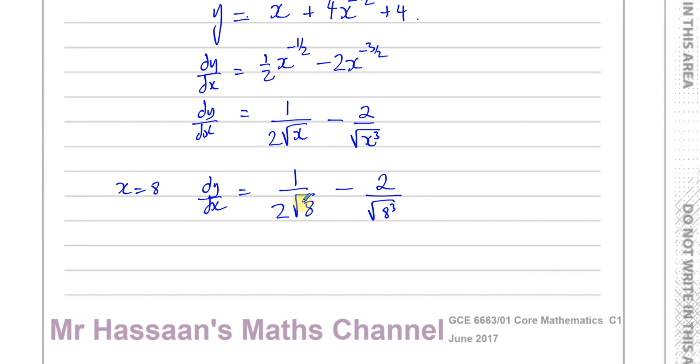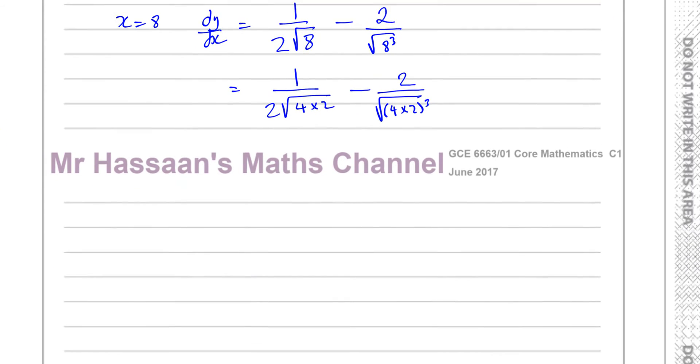Now I know that root 8, I want to write it in simplified surd form. So I have to look for a perfect square, a factor of 8, which is 4. I know 4 times 2 is 8. So I can rewrite this as 1 over 2 and I'll have the square root of 4 times 2. 8 is like 4 times 2. I can do the same kind of thing here. I'll have 2 over the square root of 4 times 2 cubed. I'm just rewriting the 8 in this form to make it easy for me to then simplify.